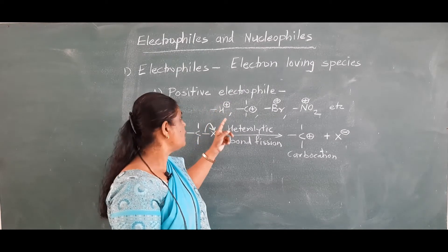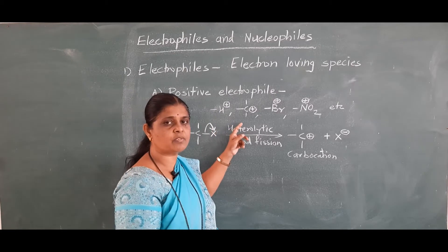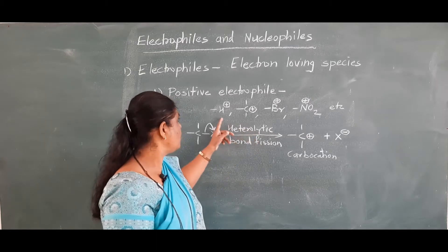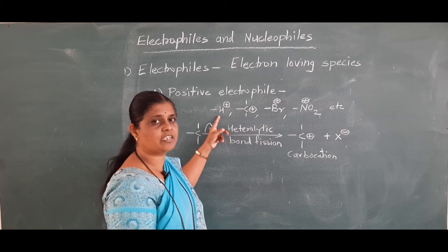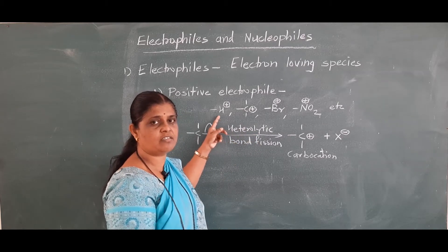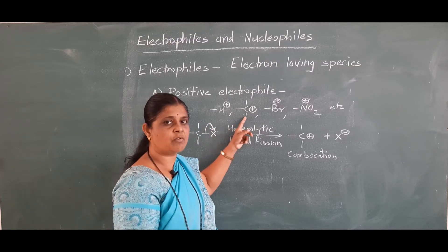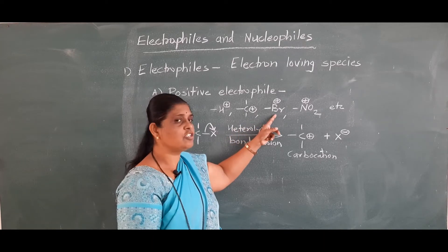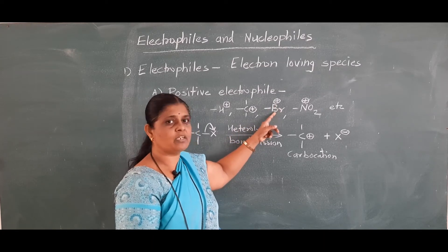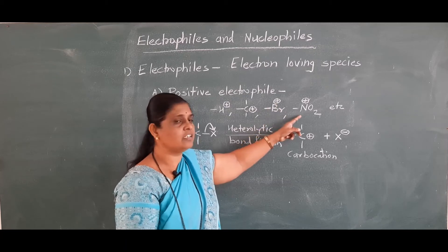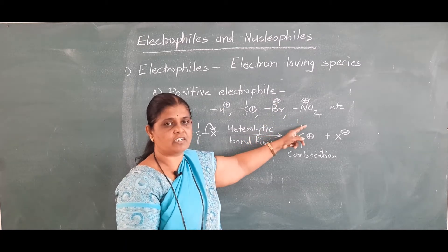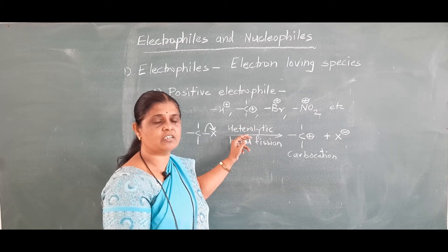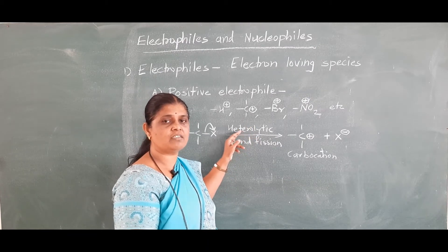Positive electrophiles are the atoms or groups having positive charge or carrying positive charge. For example, H⁺ ion which is known as proton, carbocation which is carbon carrying positive charge, bromonium ion which is bromine carrying positive charge, nitronium ion, etc. That is, atoms or groups which carry positive charge are known as electrophiles.